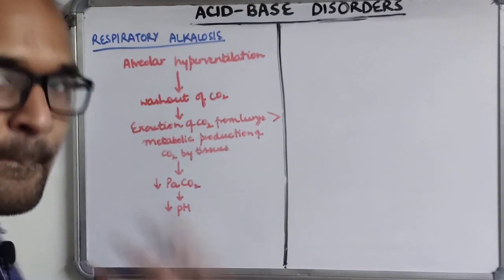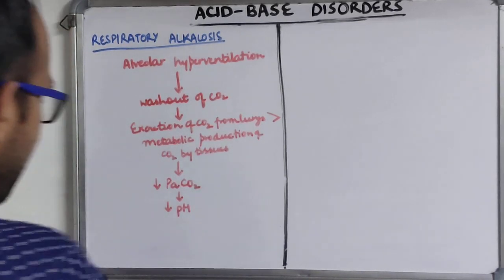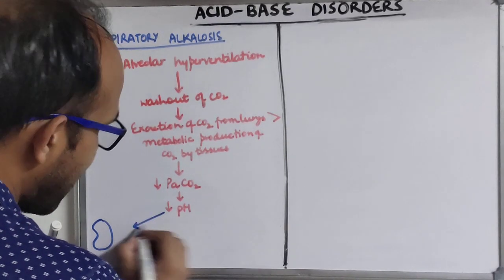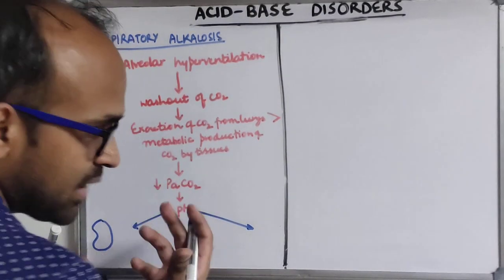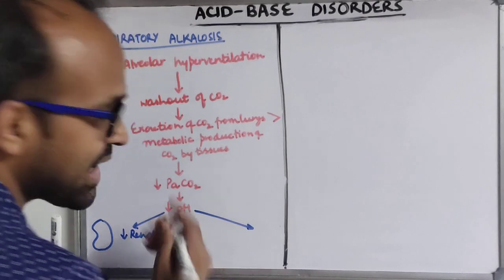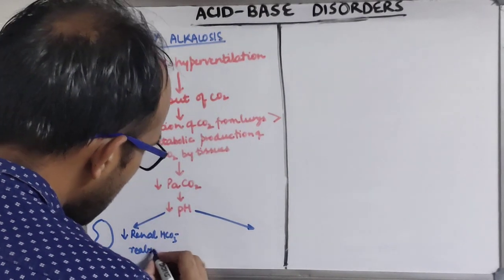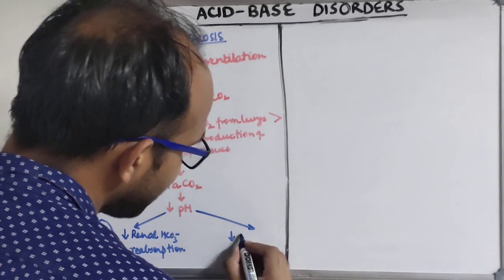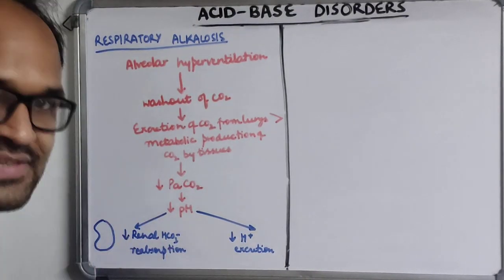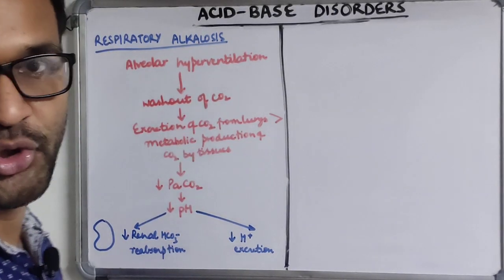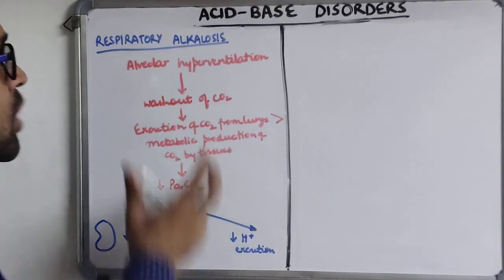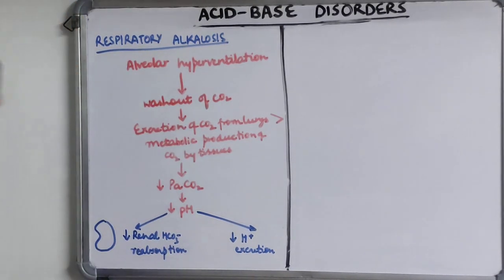The compensation mechanism in respiratory alkalosis involves the kidneys. Two things happen: there is decreased renal bicarbonate reabsorption and decreased H⁺ excretion from distal renal tubules. Because of decreased bicarbonate reabsorption, there is increased excretion of bicarbonate in the urine and retention of H⁺ ions. This is the compensatory mechanism to tide over respiratory alkalosis.